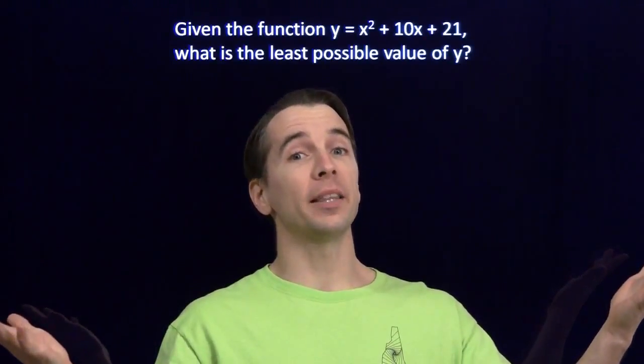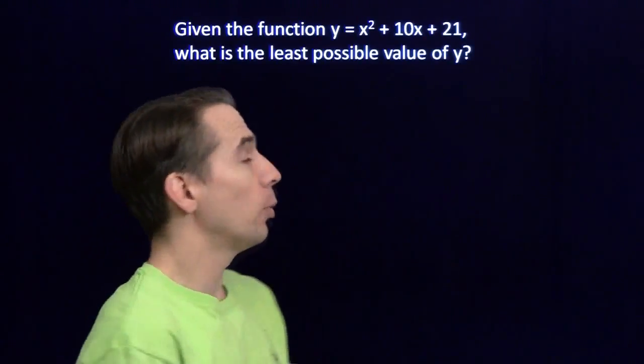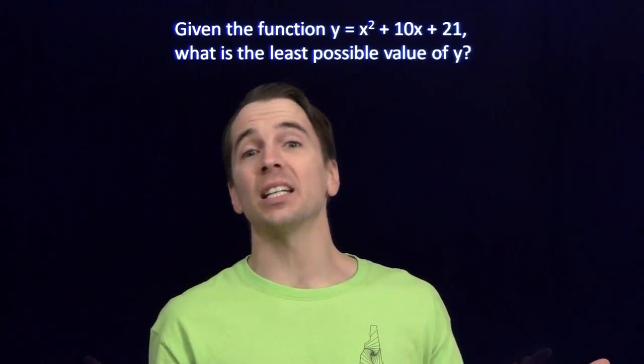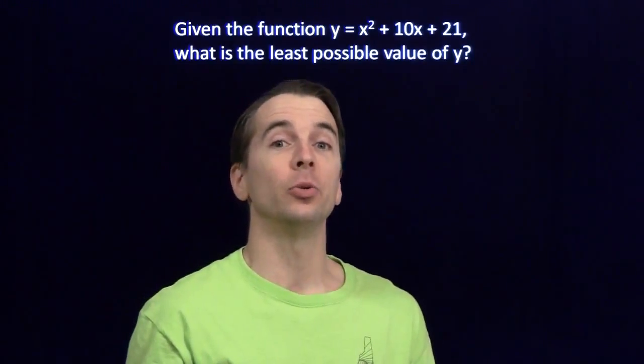I know you made that New Year's wish for more Math Counts minis, so here we go. We got y equals x squared plus 10x plus 21. We want the least possible value of y.